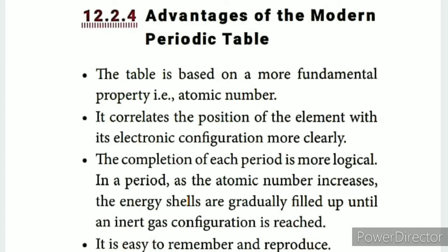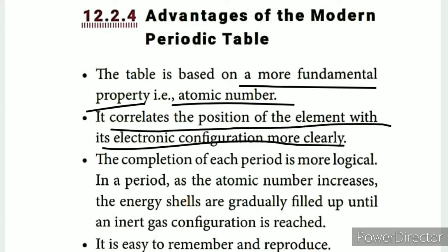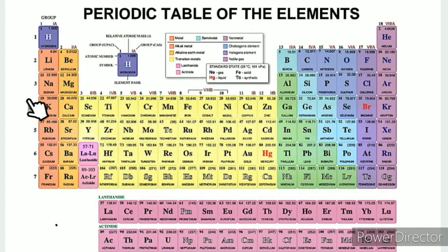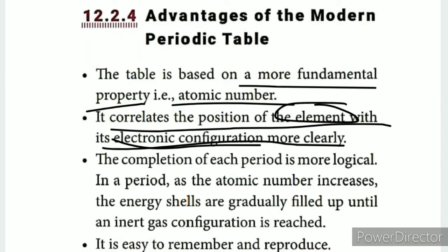The modern periodic table is based on atomic number, which is a fundamental property. The atomic number correlates the position of an element with its electronic configuration more clearly. It explains the completion of each period more logically - in a period, as the atomic number increases, the energy shells are gradually filled up until the inert gas configuration is reached. It is easy to remember and reproduce.